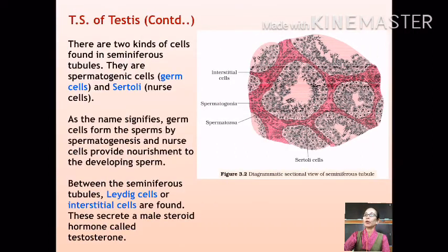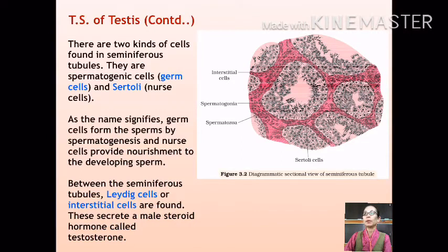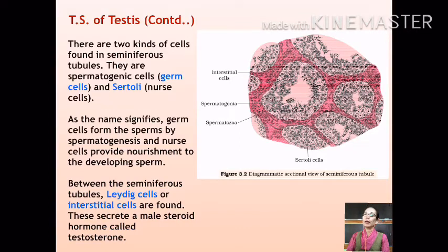There are two types of cells inside the seminiferous tubules: the germ cells and the Sertoli cells. Germ cells produce sperms by a process called spermatogenesis, and Sertoli cells provide nourishment to the developing sperms. Outside of the seminiferous tubules are the Leydig cells or interstitial cells that secrete testosterone. We will learn the details of spermatogenesis and hormonal influence on the reproductive system in a subsequent lesson.